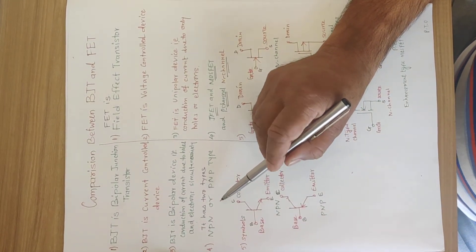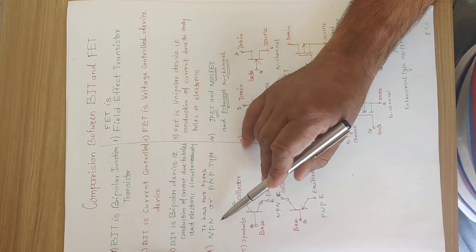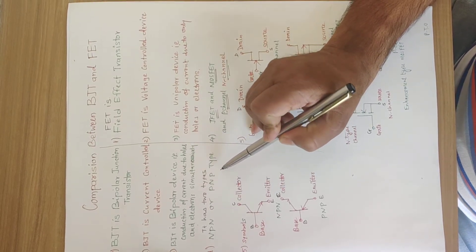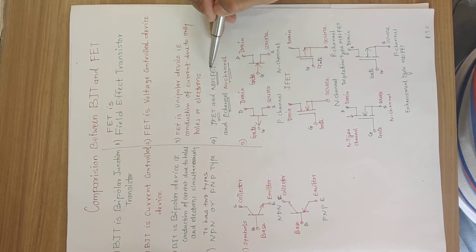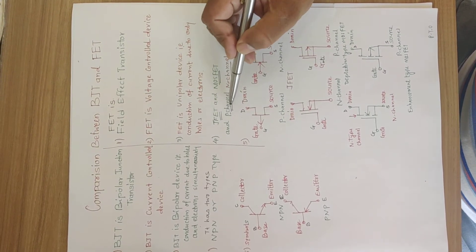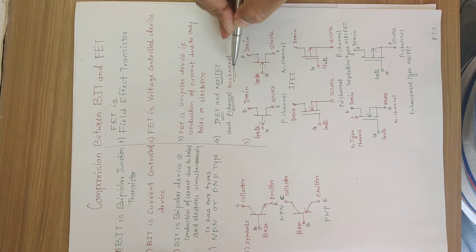Transistor BJT has two types, NPN or PNP types. In FET, we have JFET and MOSFET. JFET also having two types, P channel and N channel.